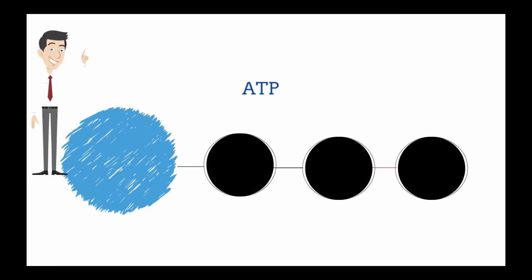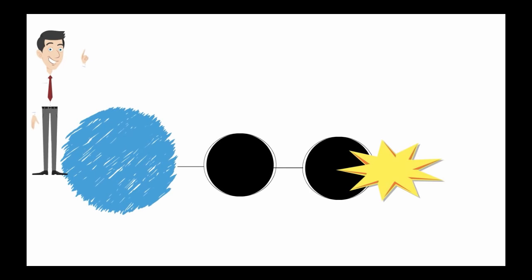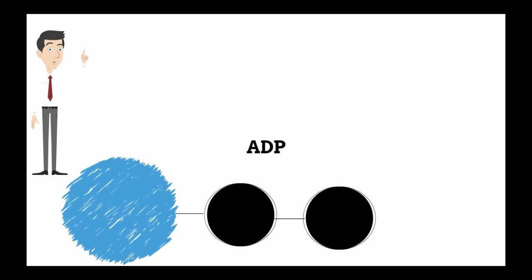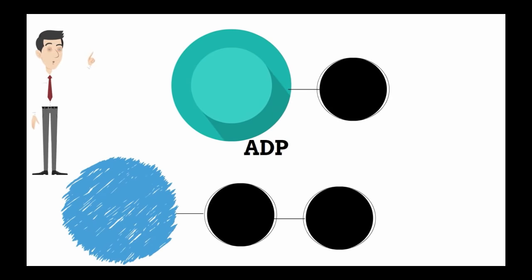In order to understand energy systems, you need to understand ATP, which is adenosine triphosphate. ATP is the only form in which our body can use energy. Our body takes the energy from the last bond between the two phosphate molecules and converts it from chemical energy into physical energy.